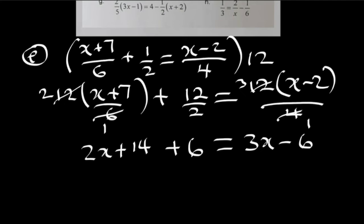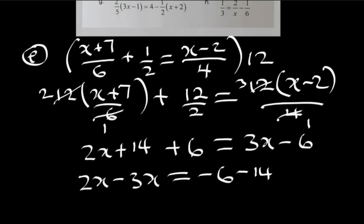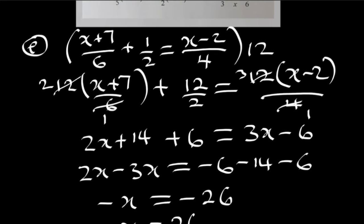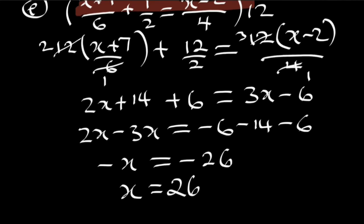And 12 divided by 4 is 3, so distributing: 3 multiplied by x is 3x, and 3 multiplied by negative 2 is negative 6. Bringing all x terms to the left and constants to the right: 2x minus 3x equals negative x. And negative 6 minus 14 minus 6 equals negative 26. Dividing both sides by negative 1, x equals positive 26. So the value of x equals 26.